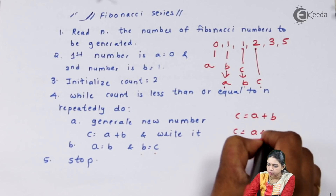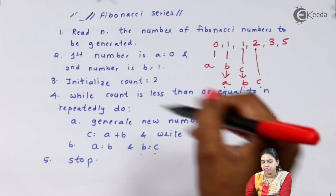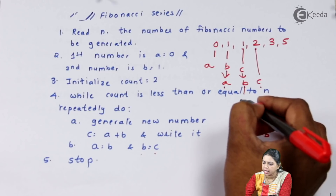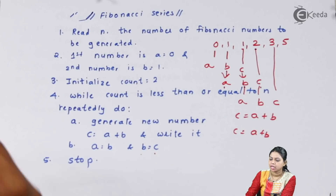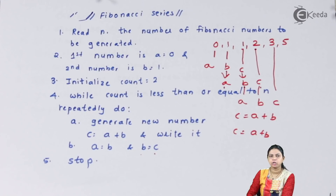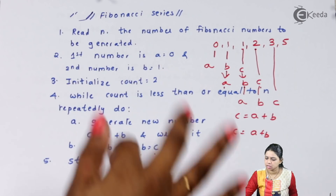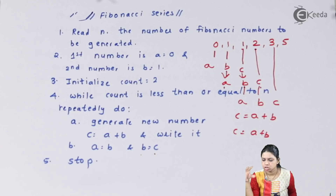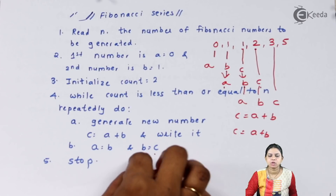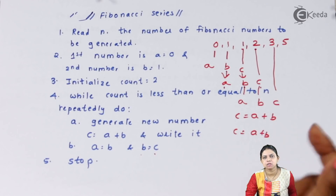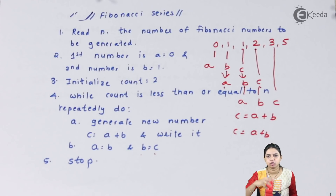Again you write c = a + b, giving 1 + 1 = 2. After each iteration, a = b and b = c, then compute the new c = a + b. You keep doing this until count is less than or equal to n. If n = 10, you generate the first 10 Fibonacci numbers. After every iteration, exchange the terms so b becomes a and c becomes b, then calculate the new c.